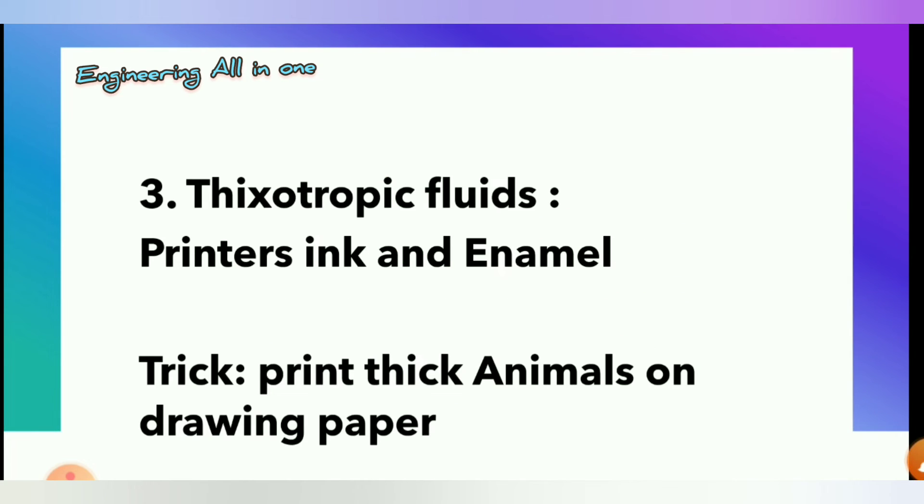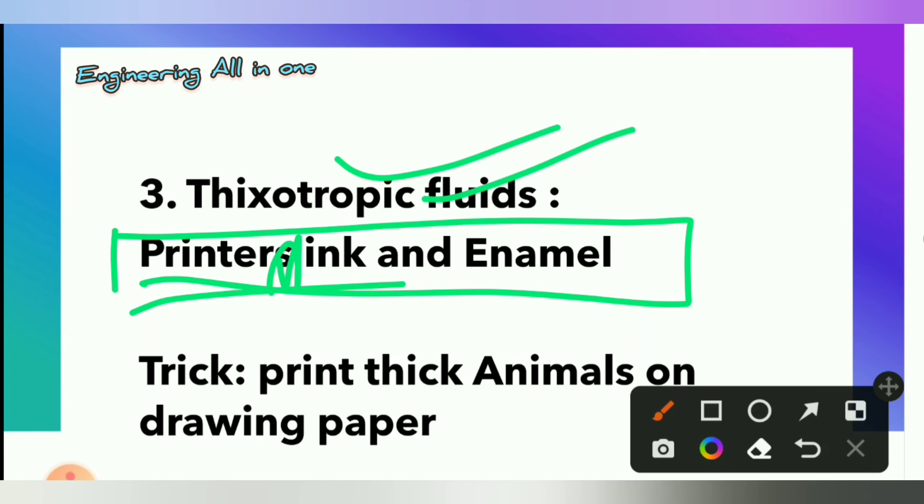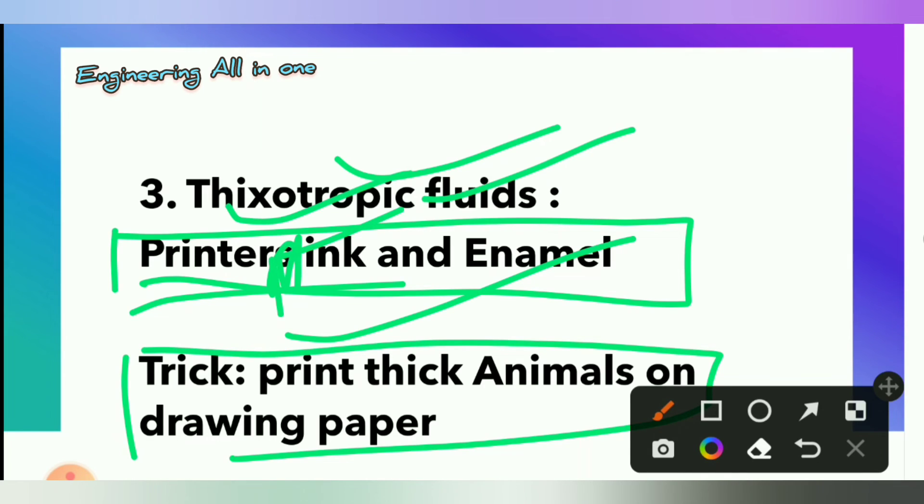Now see third type of non-Newtonian fluid is thixotropic. To remember this, we have a sentence here. These two are the examples. Printer's ink and enamel are the examples of thixotropic fluid.